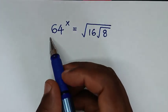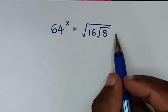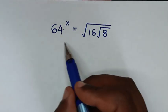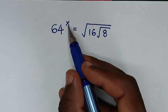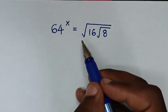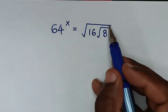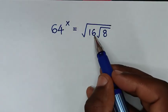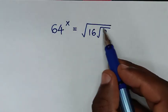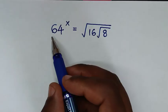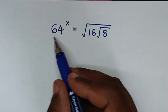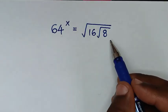Hello, you are welcome to solve this math problem, which is 64 to the power of x is equal to the square root of 16 times the square root of 8. We need to find the value of x from this equation.